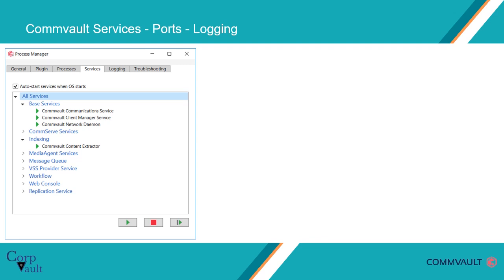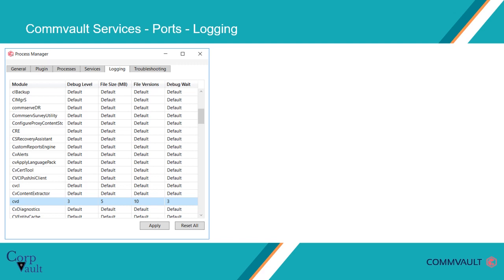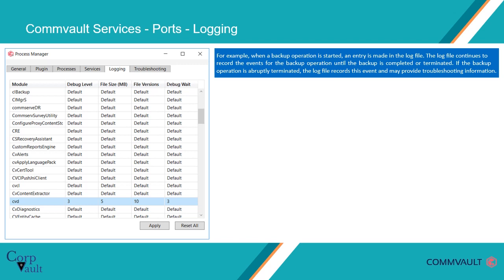Let's discuss process logs in the Process Manager. Click on the Logging tab to view the logs created by the process. A log file contains time-stamped events useful to understand the activity of a process and to diagnose problems. Here you see five columns: module name, debug level, file size in MB, file versions, and debug weight. By default, all of these are set to default and can be customized as needed by double-clicking inside the cell in the row of the module you want to update.